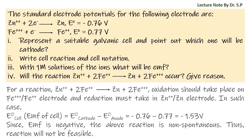For a reaction Zn²⁺ + 2Fe²⁺ → Zn + 2Fe³⁺, oxidation should take place on iron electrode and reduction must take place in zinc electrode. In such case, the total emf of cell will be potential of cathode minus potential of anode.